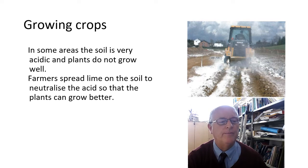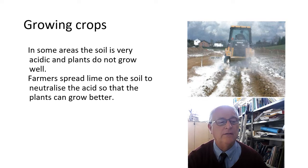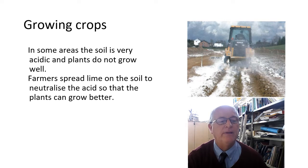Growing crops. In some areas the soil is very acidic and plants do not grow well. Farmers spread lime onto the soil to neutralize the acid so that the plants grow better.